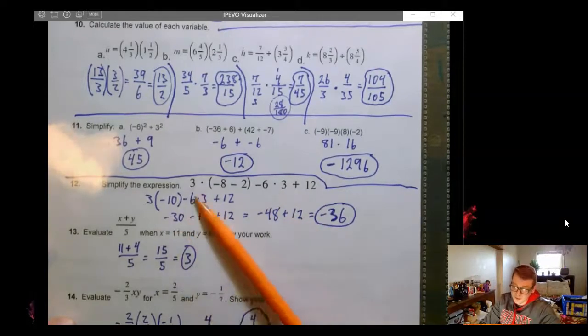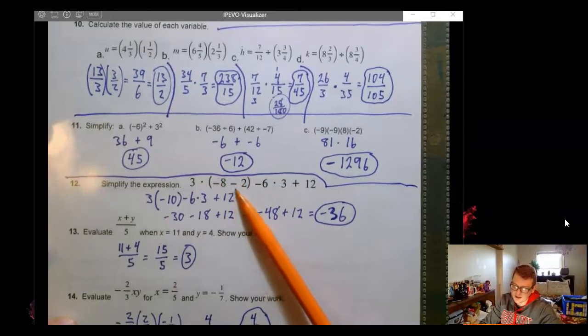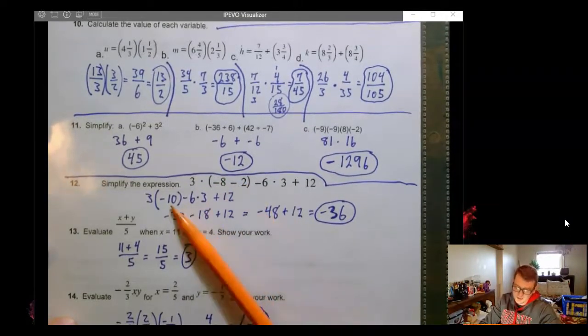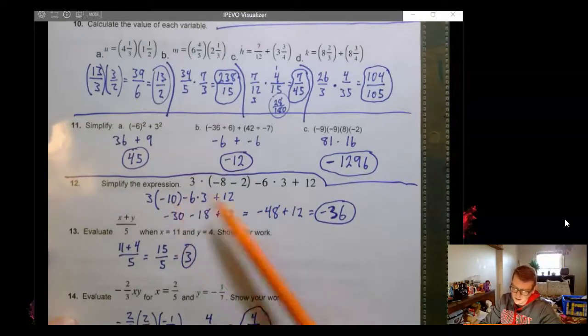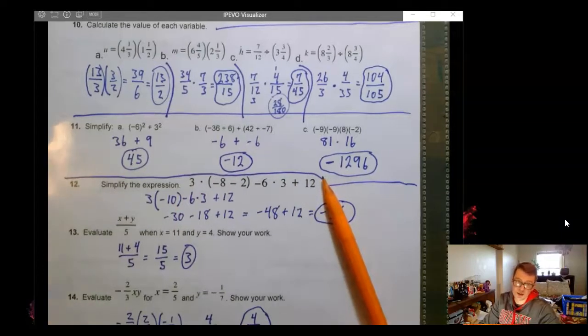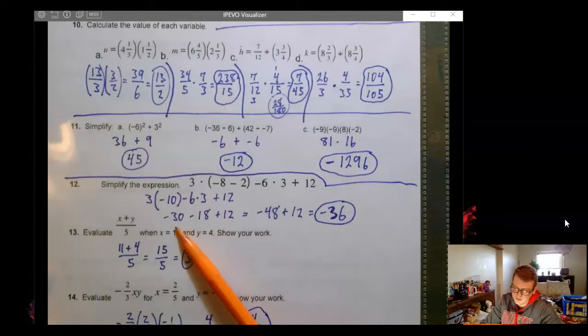So if we follow PEMDAS, we need to combine inside the parentheses. So a negative 8 and a negative 2, right? Or a negative 8 minus 2 if we want to read it that way. It becomes a negative 10. There's nothing else in parentheses. So now we move on to exponents. There are none. We move on to multiplication.